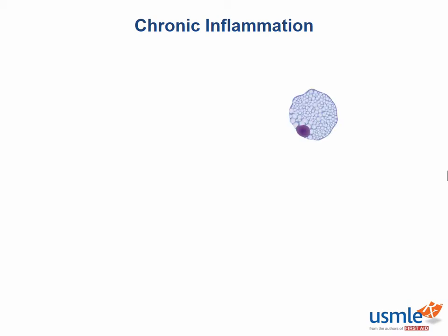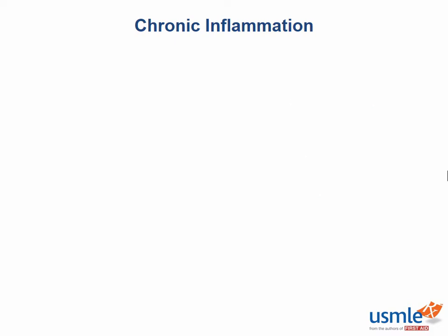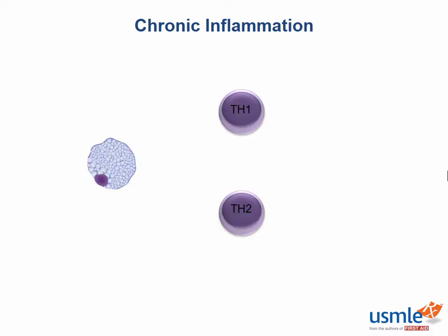Macrophages, lymphocytes, and plasma cells. Chronic inflammation is a result of the interaction between macrophages as well as lymphocytes.